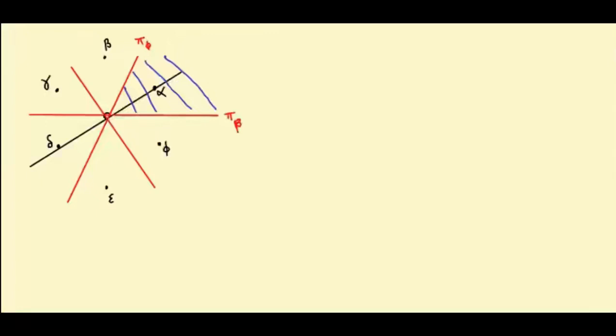So this is called a Weyl chamber. And the point is that if I take one Weyl chamber and I act using the Weyl group and take all its images, then I'm going to fill the whole space, the whole plane.